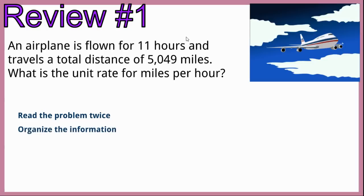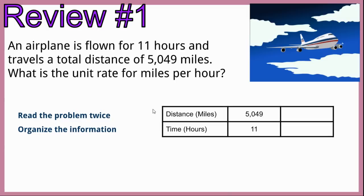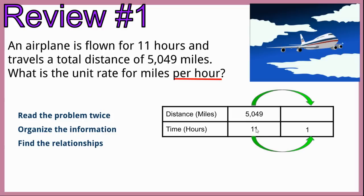Now we're going to organize the information using a table. We have distance over time, which is miles to hours. Per hour means one, so we're finding miles per one hour. We go from time to time and miles to miles. We're going to divide both by 11 because 11 divided by 11 is 1. So 5,049 divided by 11 gives us our unit rate for miles per hour.